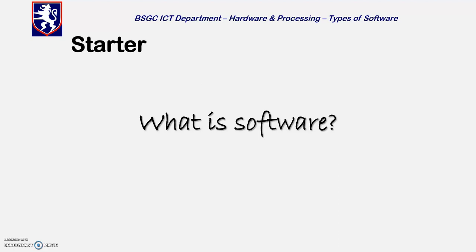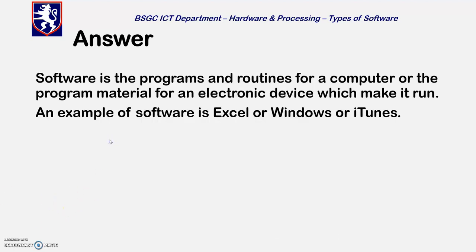Okay, welcome back. So what is software? The definition I have here is: software are the programs and routines for a computer, or the program material for an electronic device, which make it run. An example of this would be Excel, Windows, or iTunes — any of those.